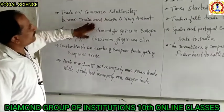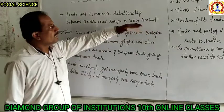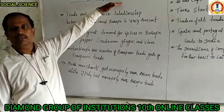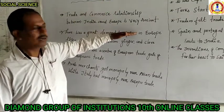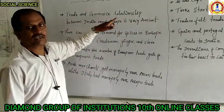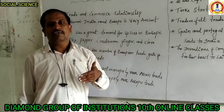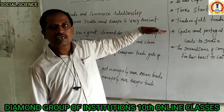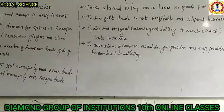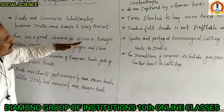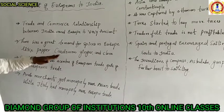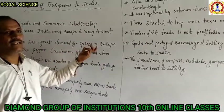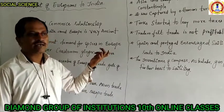The trade and commerce relations between India and Europe are very ancient. Since the ancient period we find relations between India and Asian countries with Europeans. Europeans maintained relations with India for trade and commerce because the eastern countries provided great benefits. There was great demand for spices in Europe like pepper, cardamom, ginger, and cloves, and these spices were found in eastern or Asian countries.